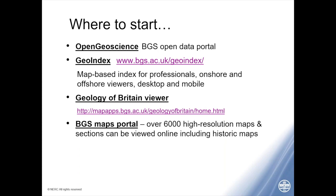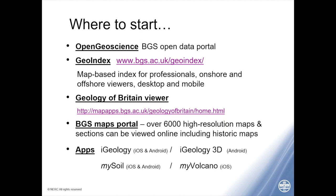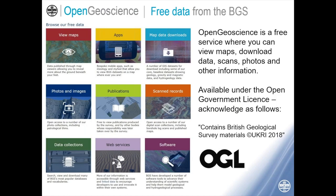We also have the BGS Maps Portal — there's no need to buy a physical copy of a map when you can go online and find it there. Every single map the BGS has ever produced — over 6,000 maps — has been scanned in high resolution and can be viewed online. And finally I'd recommend our apps, in particular iGeology, as well as iGeology 3D, MySoil, and MyVolcano. Open Geoscience offers all this free data: you can view maps, download data, scans, photos and other information, all under an open government licence.